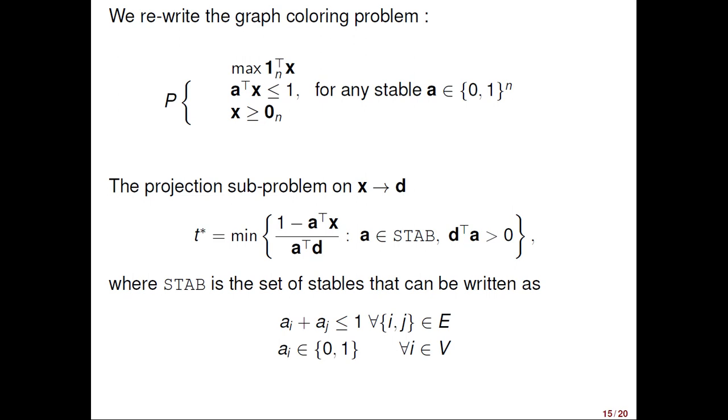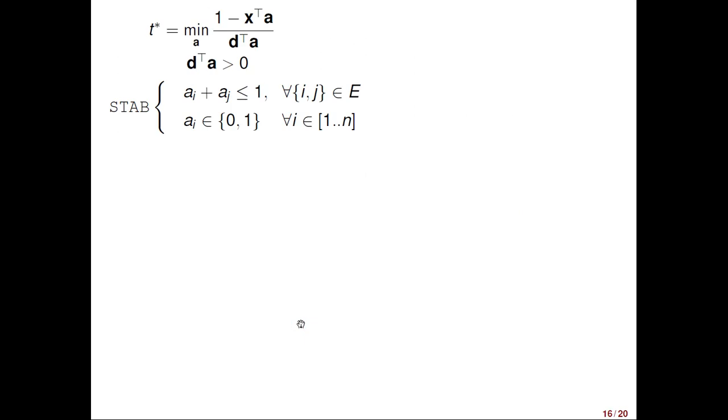Let me rewrite the dual column generation model of the graph coloring problem this way. I only used the same notation as in the previous slide. So, this is nothing new, but I wrote it this way. And the projection subproblem on x projected towards b can be found by minimizing this. Here, I use the same ratio that appeared, that I displayed three slides ago, when I first discussed in a very general sense the projection subproblem. We need to minimize this ratio over the set of stables that do satisfy this small condition. Here, I call STAB the stable set polytope described by these two inequalities.